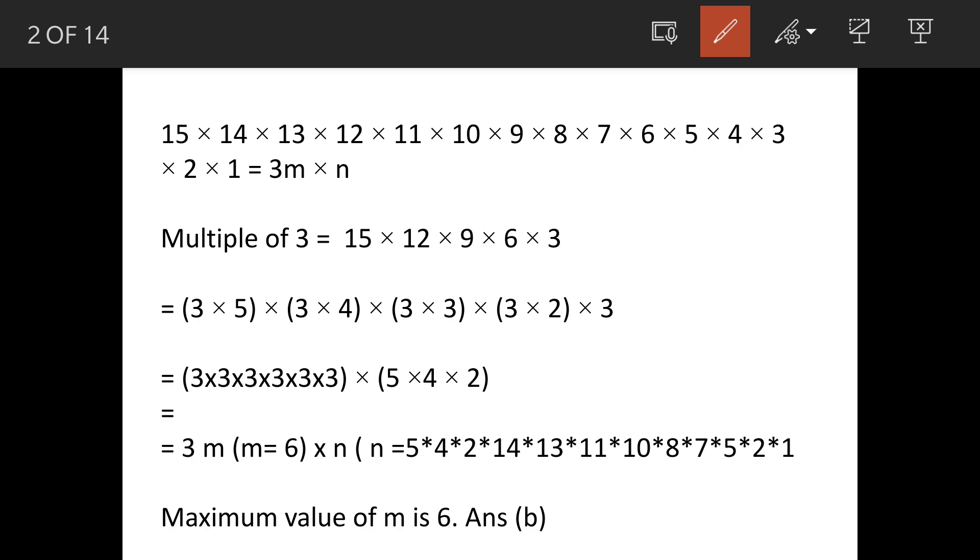We have written all the numbers till 1. Now this denotes 3^m × n, so what are the multiples of 3? 15, 12, 9, 6, 3. So how many threes are there? One, two, three, four, five, and six. So we can write this number as...